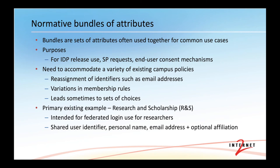Speaking of the exchange of attributes, there are now normative bundles. They're used together for common use cases. The IDP might decide it's going to implement a bundled release and release the set of attributes if a relying party is so tagged. It can handle requests from SPs for attributes, and normative attribute bundles can also be used to configure end-user consent mechanisms such as CAR. The need to accommodate a variety of existing campus policies has made some of these attribute bundles more complicated than they need to be, because if all universities never reassigned email addresses, it would be that unique, perfect identifier — but that's not a policy at all universities.